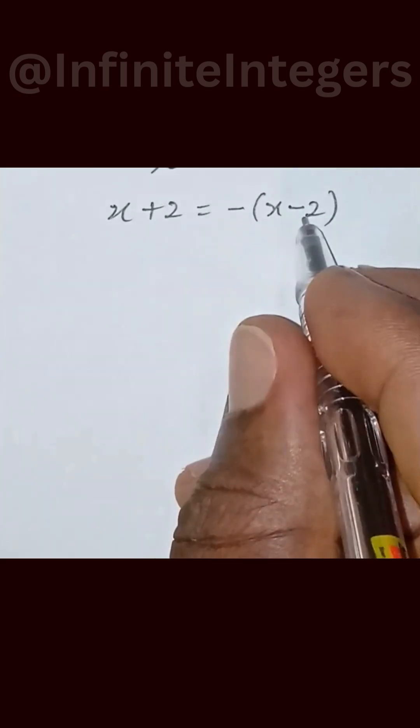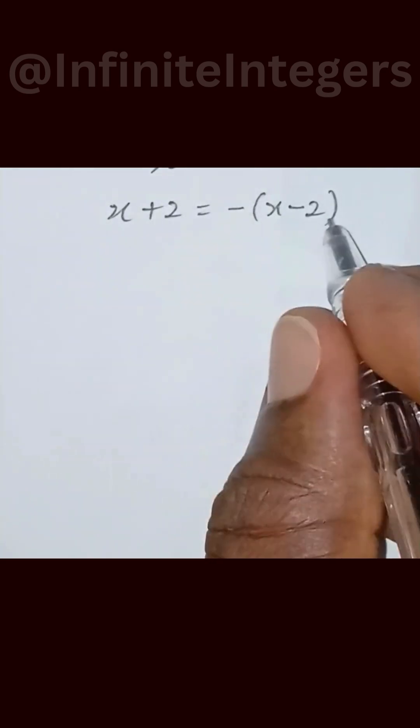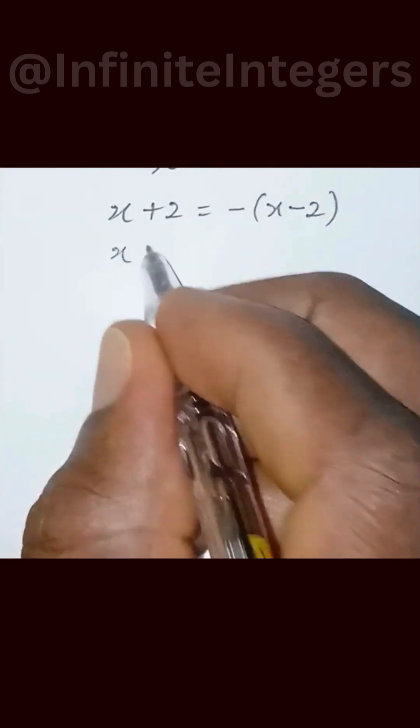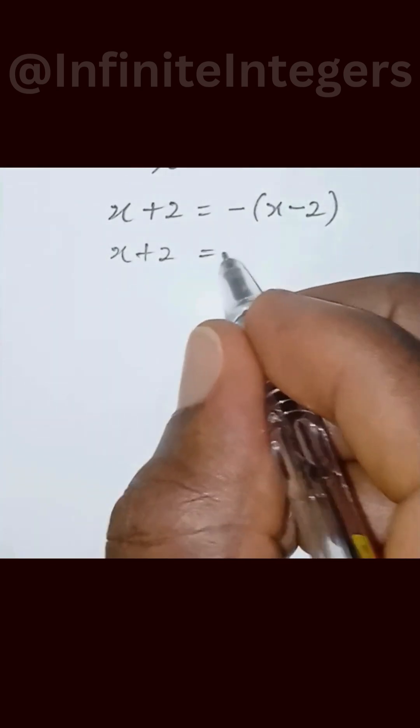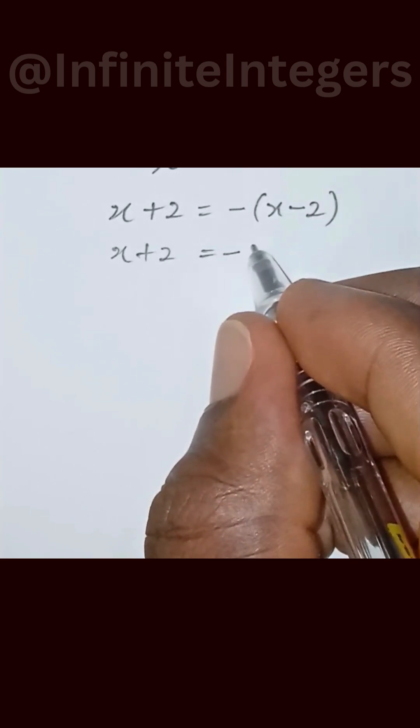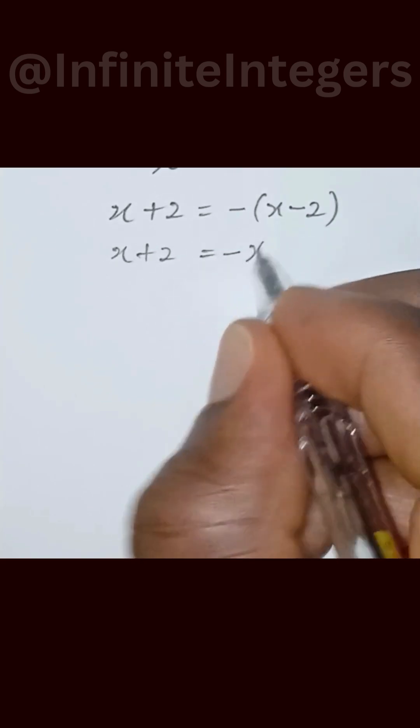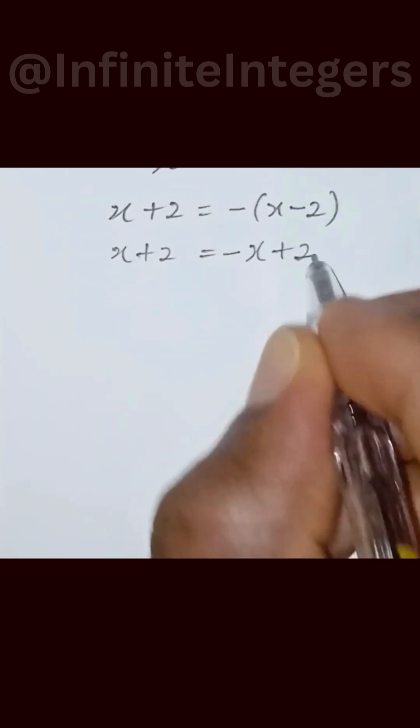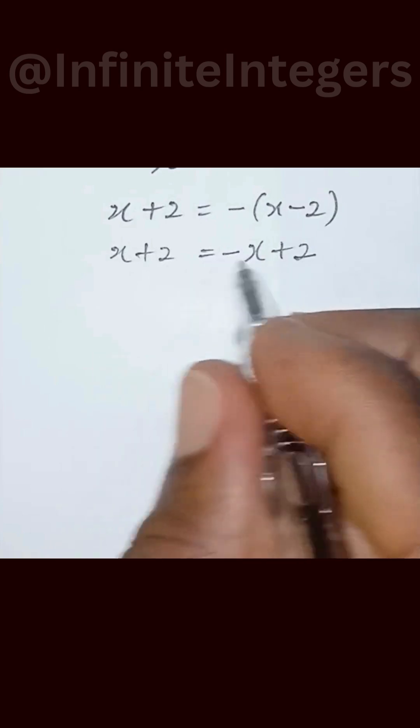So multiply the negative with the bracket. With what we have in the bracket, we have x plus 2 equal to minus x plus 2.